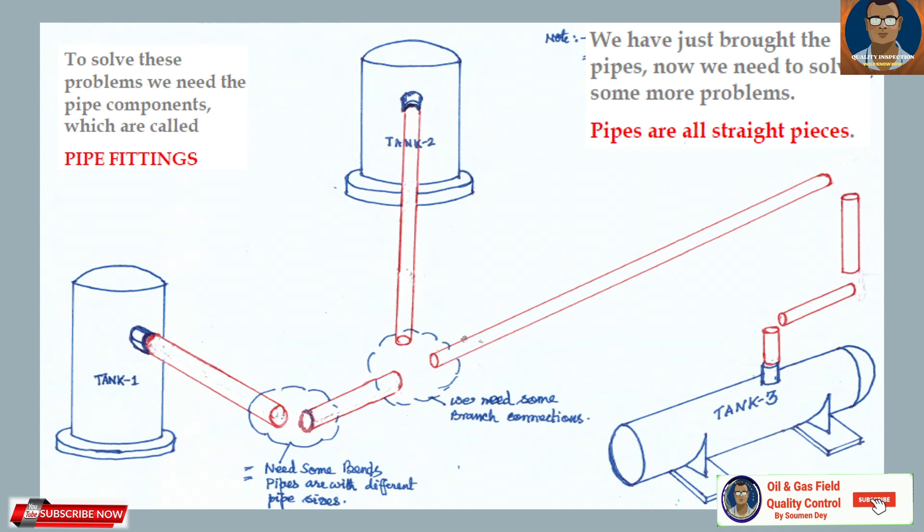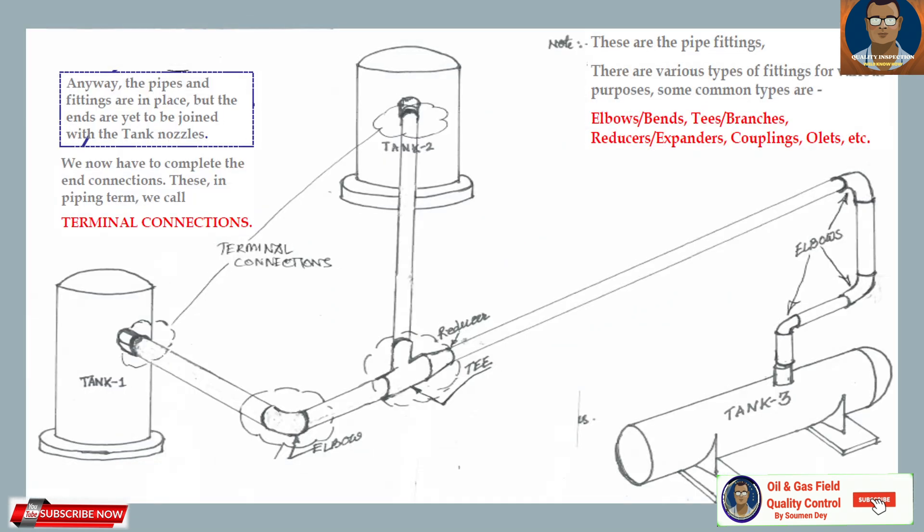Because the pipes are different sizes, the bends cannot be of the same diameter. We need to reduce at one end, have a bigger connection at another, and also need some branch connections. Here you can see we have connected the pipes with fittings — where pipes turn, we put elbows; where branch connections are needed with different pipe diameters, we put a T as well as a reducer to connect the smaller diameter pipe. There are various types of fittings.